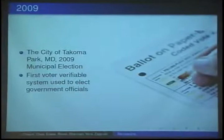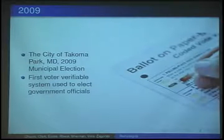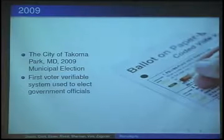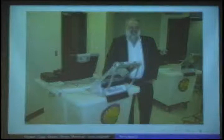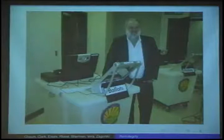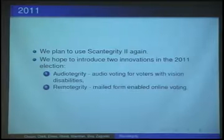Just as a reminder, in 2009 the mayor and the city council of the city of Tacoma Park were elected using an end-to-end verifiable voting scheme, and as far as we know, it was the first ever use of secure end-to-end technology to select governmental officials. Voters liked the election, and officials also. This is a picture of David Chaum, and we were invited to perform another election, which will be in November this year.